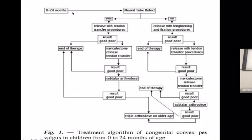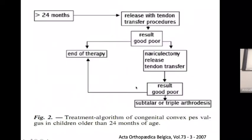For cases less than two years with no associated defect: soft tissue release, lengthening, and fixation. If results are good, treatment ends; if poor, release with tendon transfer and naviculectomy is attempted, and if still poor, subtalar arthrodesis is performed. For children over 24 months: release with tendon transfer first; if poor results, naviculectomy with tendon transfers; and if still poor, triple arthrodesis and subtalar fusion.